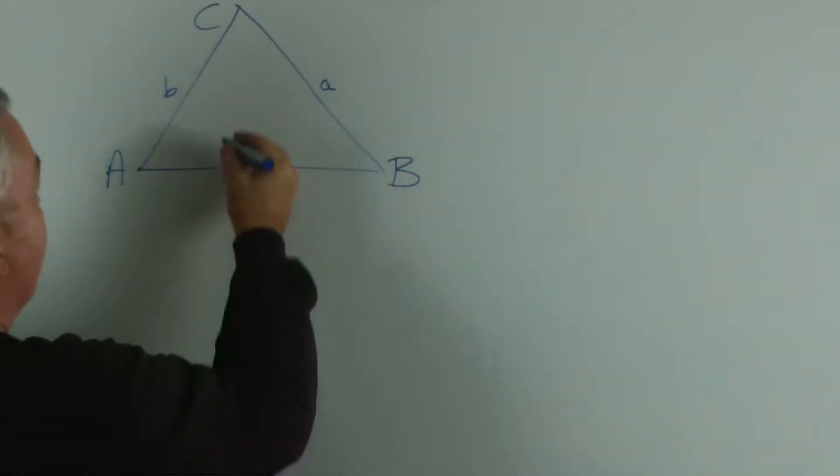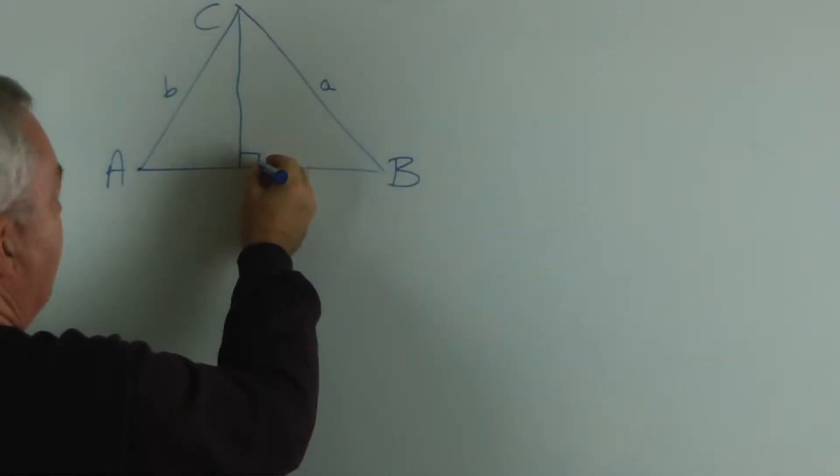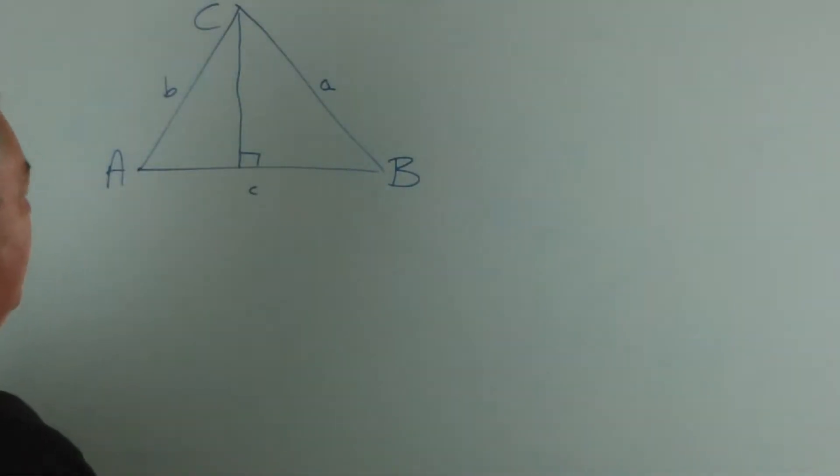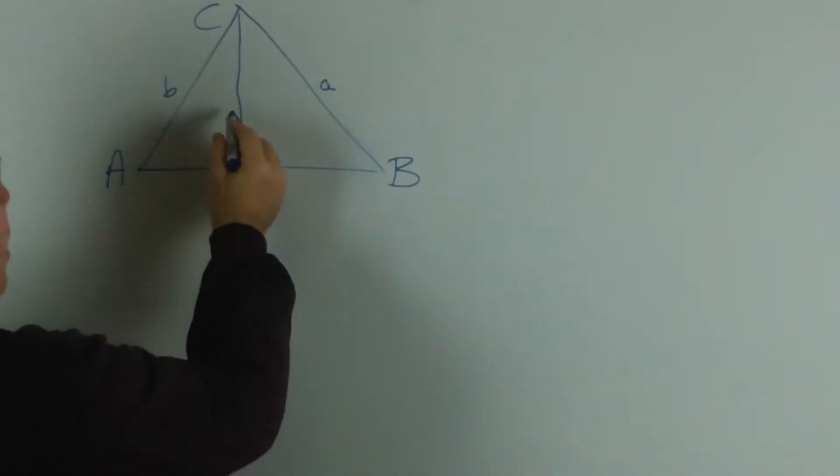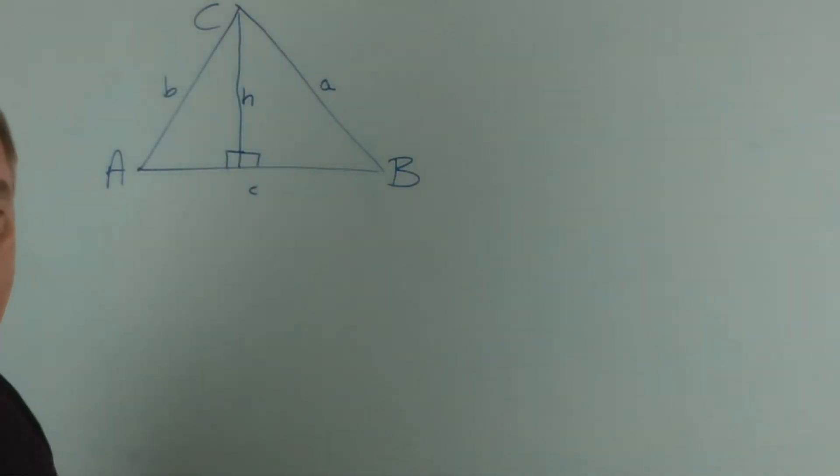And the construction is this: draw a perpendicular line from C to the base of the triangle, and we'll call this height h. That's all we're going to use for the sine rule.